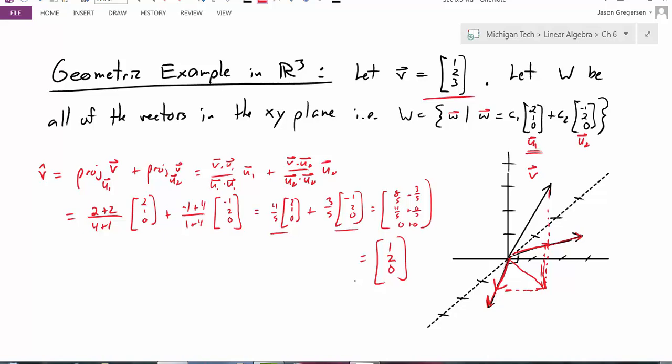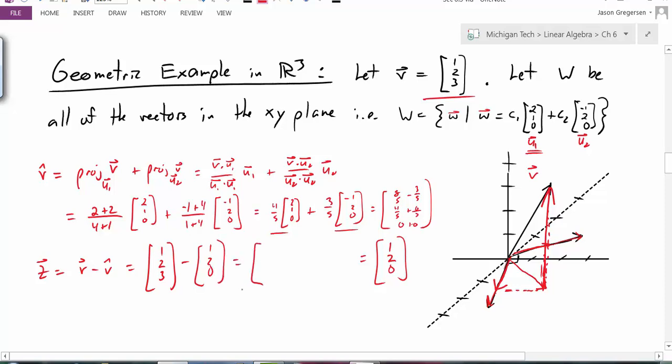And as a last step, now I can calculate this perpendicular vector, my z vector. Z is going to be just my vector v minus my projection vector. So that is 1, 2, 3 minus the vector 1, 2, 0. And the result, as we can kind of see from the picture, is going to be 0, 0, 3. So what have we done here? We've represented our vector v as the sum of two vectors. It's represented as the sum of the vector 1, 2, 0 and the other vector 0, 0, 3.